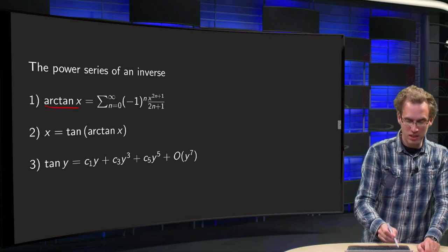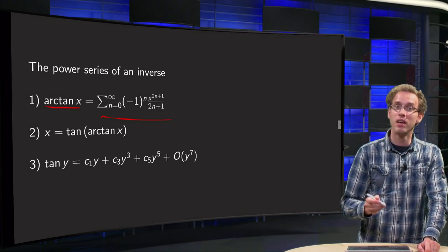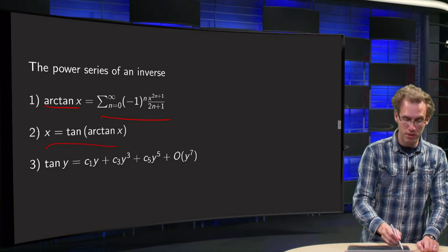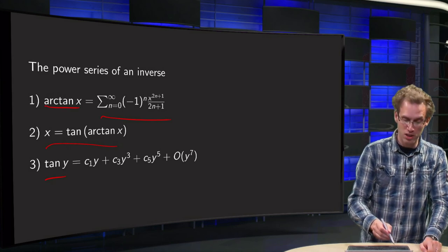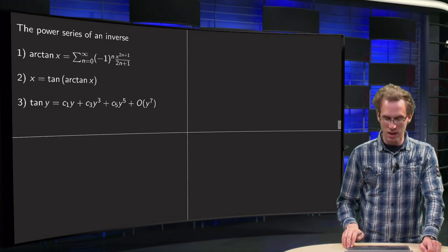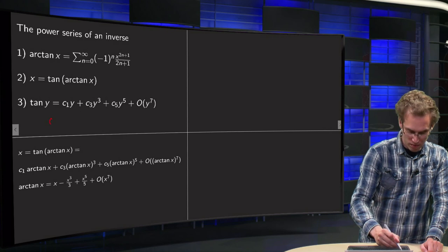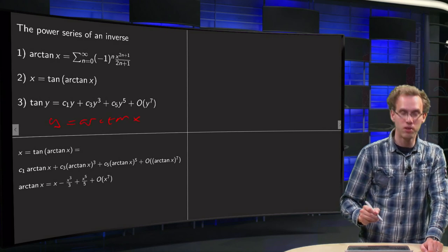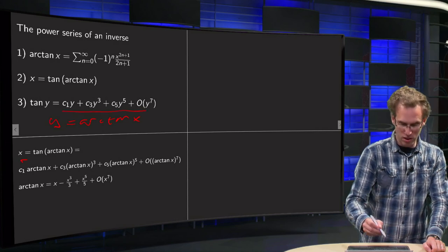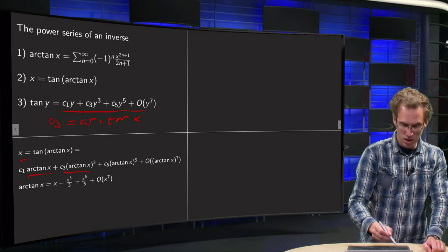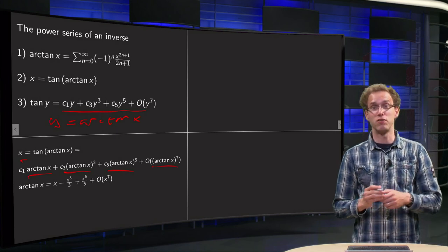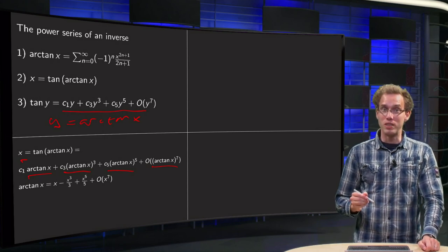So what do we know? The arctangent of x — that one was easy using the geometric series. We know that x equals the tangent of the arctangent of x for all x, and we know that if we write tangent of y, it contains only odd powers of y because the tangent is an odd function: c₁·y + c₃·y³ + c₅·y⁵ + c₇·y⁷ + ... Now we substitute y = arctan(x), so we get tan(arctan(x)) = x, and substituting the arctangent series gives c₁·arctan(x) + c₃·arctan³(x) + c₅·arctan⁵(x) + ..., which is a total mess.